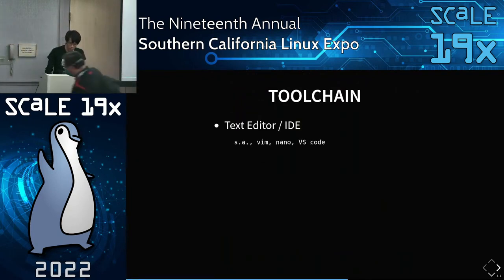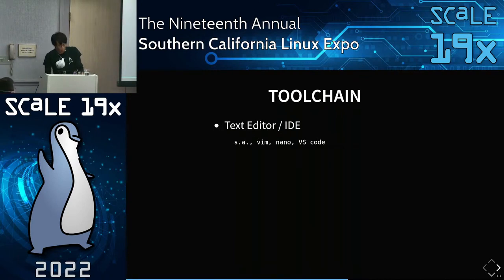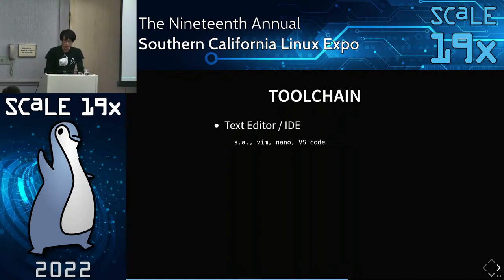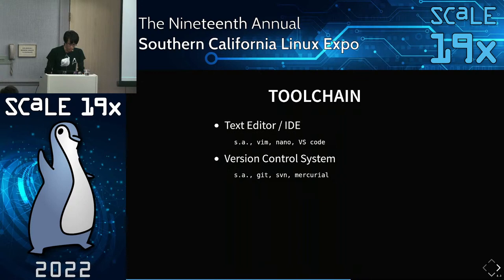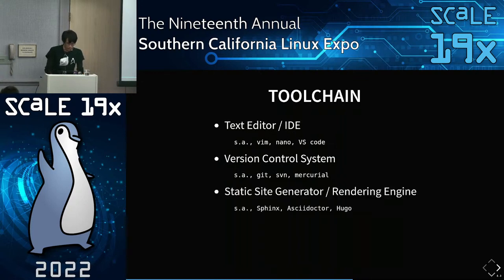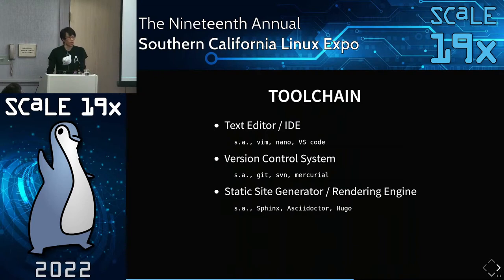Now for tool chains. You'll need a text editor — I personally like Vim, but you could use Nano or VS Code — basically something that can edit plain text. You want a version control system like Git, SVN, or Mercurial, and then a static site generator or rendering engine that can read plain text languages and convert them into something more familiar like a web page or PDF document.